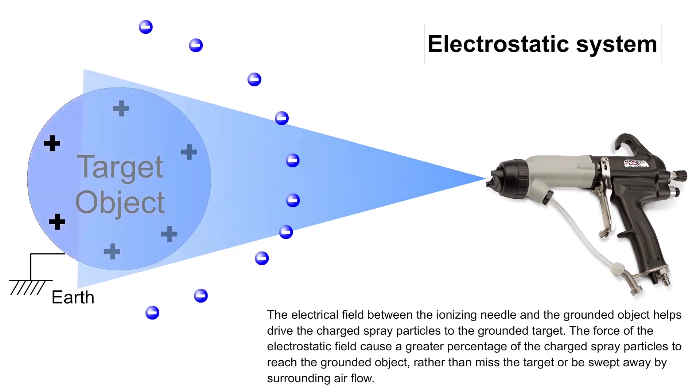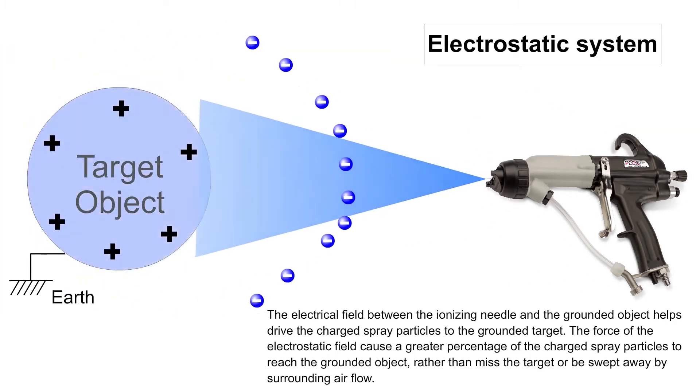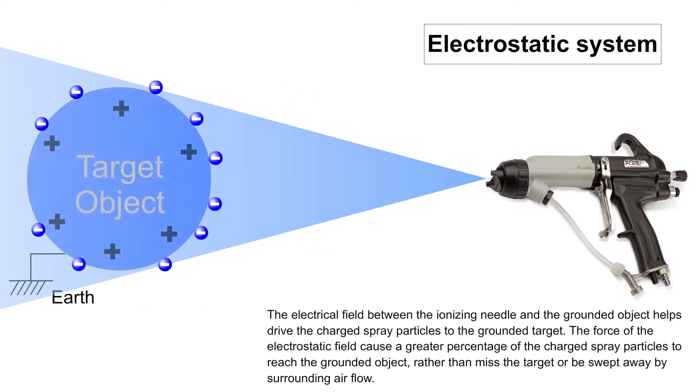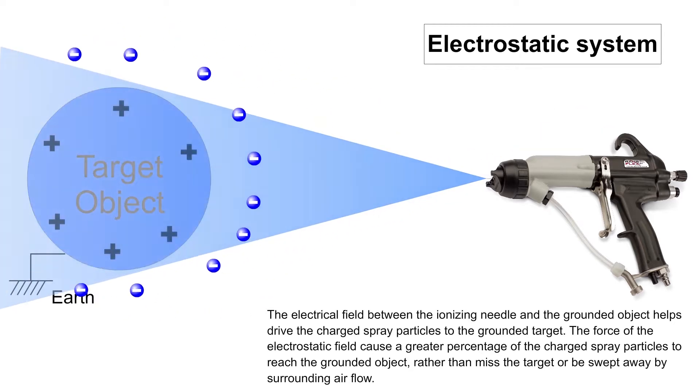When spraying, particles of the coating material are negatively charged and attracted by the grounded workpiece, wrapping around the side and back. This electrostatic spray finishing technology was invented by Mr. Harold Ransberg and brought a revolution to the finishing industry. CFT Ransberg Japan was established in Japan about 50 years ago by Mr. Ransberg.